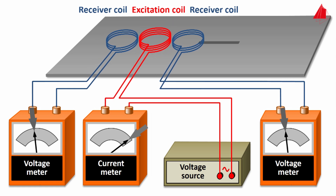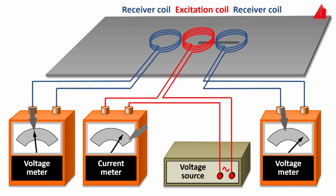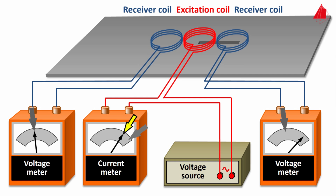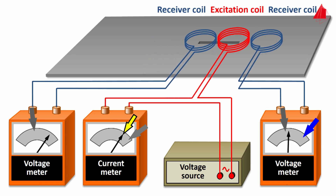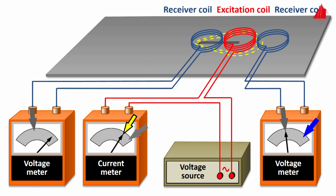When the excitation coil is positioned on the left side of the saw cut, current consumption is lower, and the magnetic field flowing through the right receiver coil is much stronger than before — so the induced voltage there is high. Equivalently, when the excitation coil is on the right side of the saw cut, the eddy current's magnetic field flows through the left receiver coil more intensely, and the voltage induced there is correspondingly high.